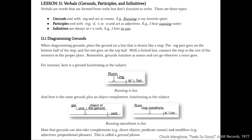Welcome back for more lessons in sentence diagramming. You may have noticed that after completing 10 lessons, you still are confronted with various sentences in life that you don't know how to diagram. We're going to try to clear that up with some extra lessons, starting with verbals. There are three types of verbals: gerunds, participles, and infinitives. So let's look at diagramming gerunds first.